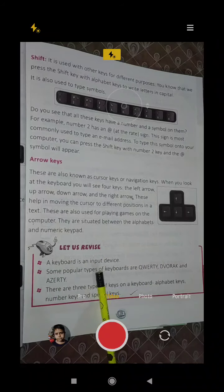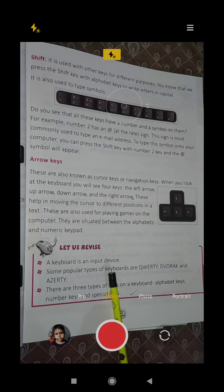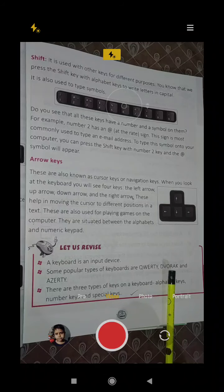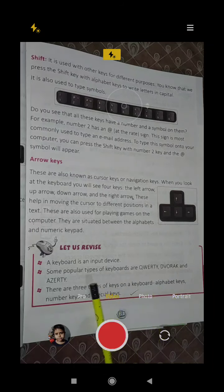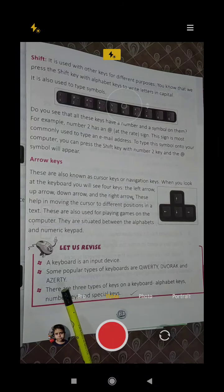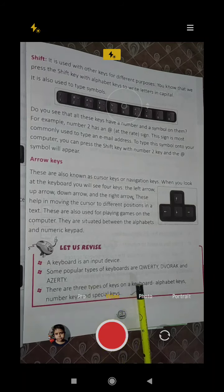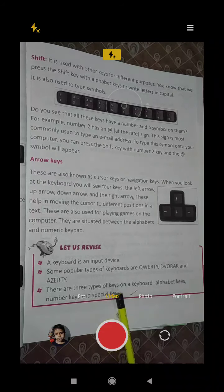Now let us revise. A keyboard is an input device. Some popular types of keyboard are QWERTY, DVORAK and AZERTY. There are three types of keys on a keyboard: alphabet keys, number keys and special keys.